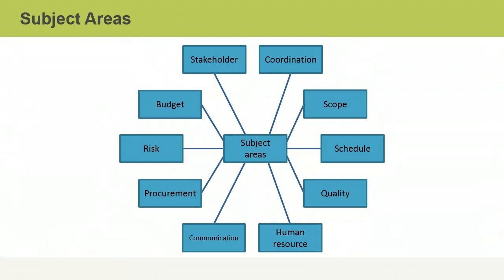Projects can be organized chronologically and also categorized by subject area. There are nine subject areas for project management. The subject areas relate to the management of project scope, time, cost, quality, human resources, communications, risk, procurement, and stakeholders.